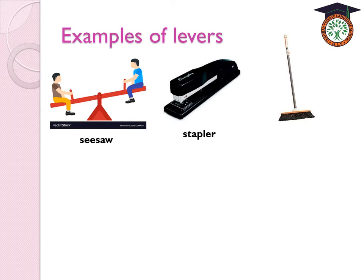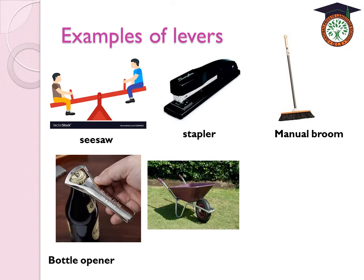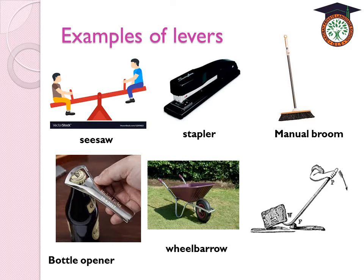Other examples include the manual broom, the bottle opener, the wheelbarrow, and the crowbar. All of them are levers because they all have a rigid bar that rotates around a fixed point called the fulcrum, and they are affected by two forces: the effort force and the resistance force.